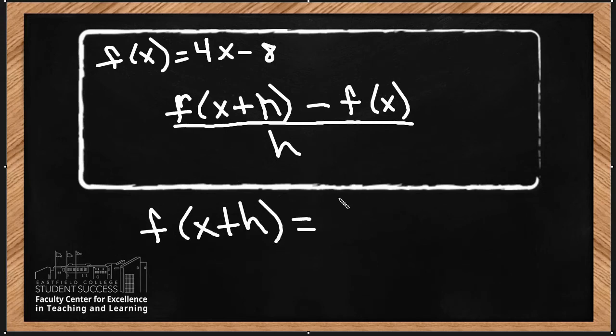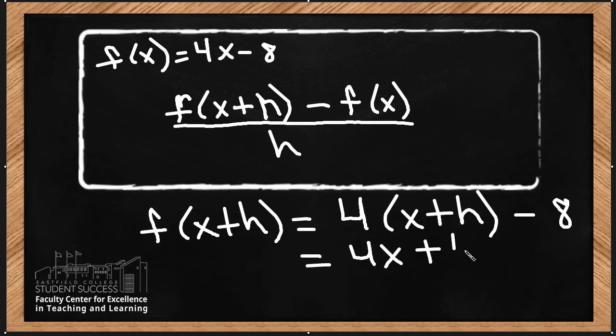It is basically telling me to substitute x plus h wherever you see an x in the original function. I'm going to distribute the 4, so I have 4x plus 4h minus 8, and I'm going to substitute 4x plus 4h minus 8 into that part of the difference quotient.